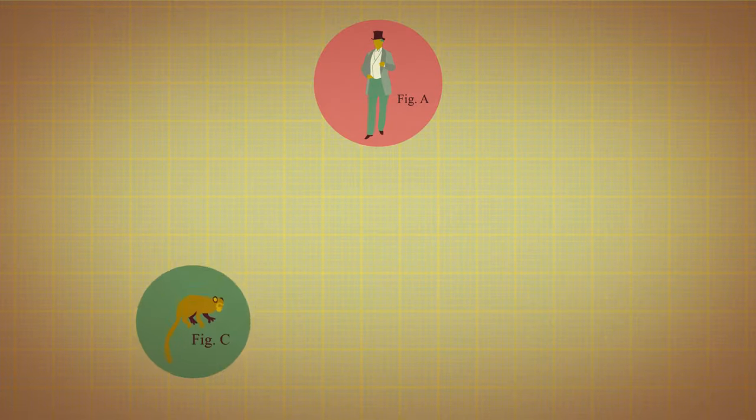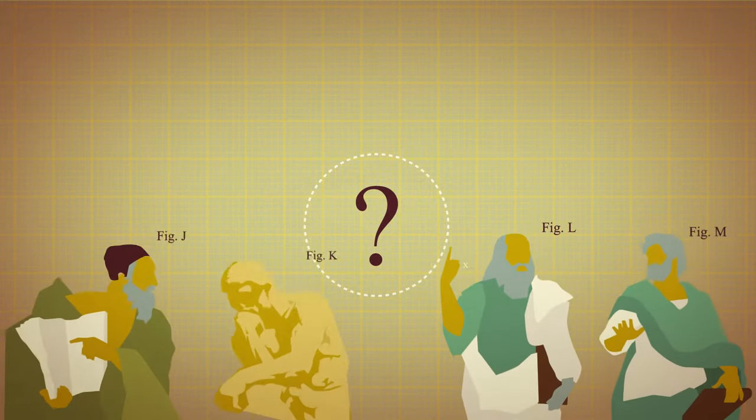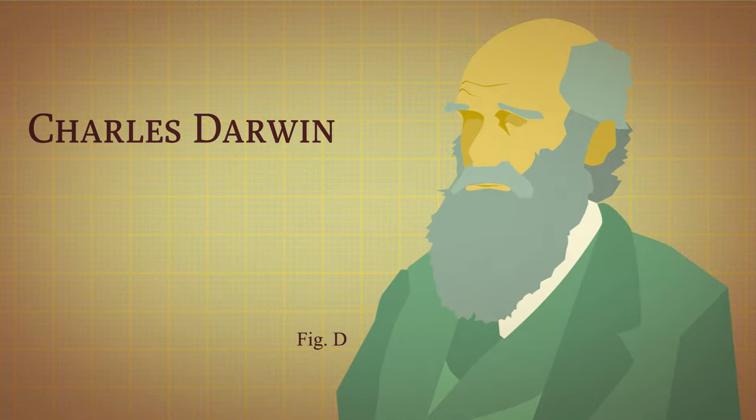Where did humans and all other living things on our planet come from? This problem puzzled humans for centuries, and there have been many different theories through the ages. Then in the mid-19th century along came a naturalist called Charles Darwin.